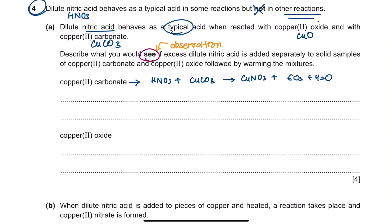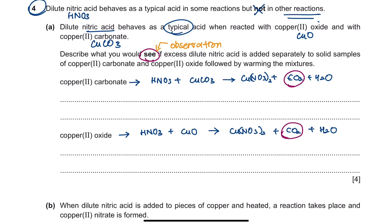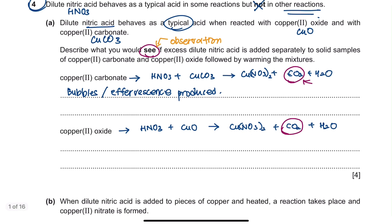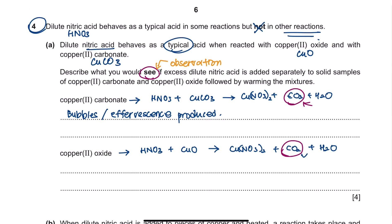For copper carbonate, the equation would look like this, and for copper oxide similarly. It is not necessary to write the chemical equation since they didn't ask for it, but it makes it easier to identify the products and determine observations. For copper carbonate, carbon dioxide is produced. Since CO2 is a gas, you will see bubbles or effervescence. The same applies to copper oxide, which also produces carbon dioxide. Since the question gives you four marks, you need to give another observation for both copper carbonate and copper oxide.